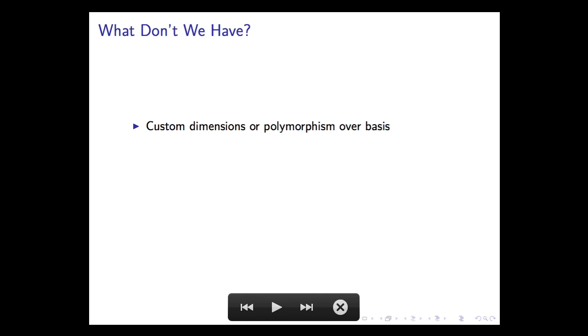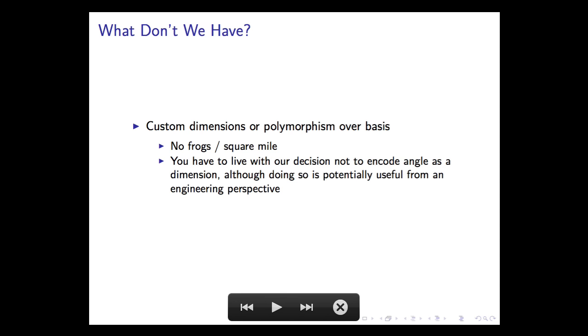Things we don't have are custom dimensions. So you can't have frogs per square mile and you have to deal with the fact that we treat angles as dimensionless. Almost everyone agrees that they are but there's some dispute over it and it's kind of more useful from an engineering perspective to treat them as having a dimension. But I don't know, either way you can't choose the opposite because what dimensions there are is baked into the library and you can't make any new ones.